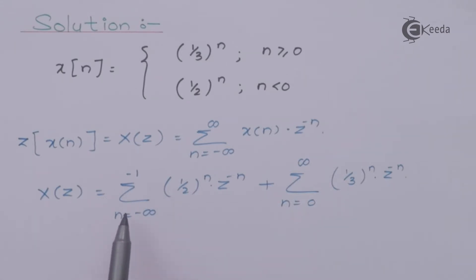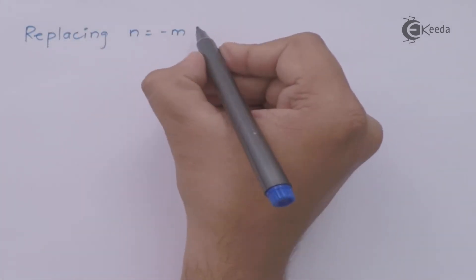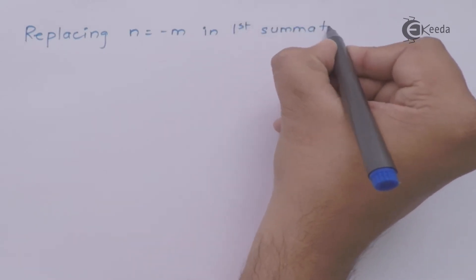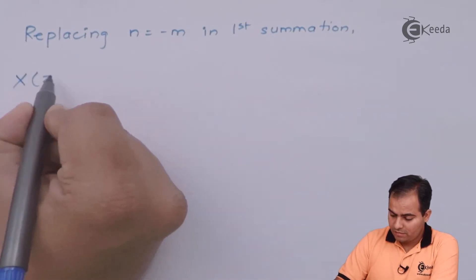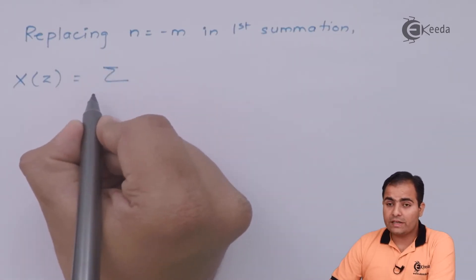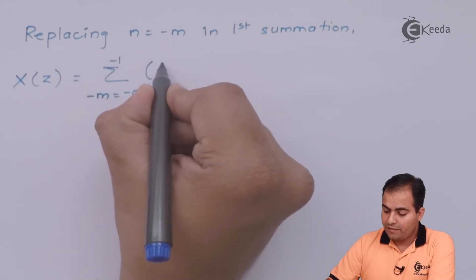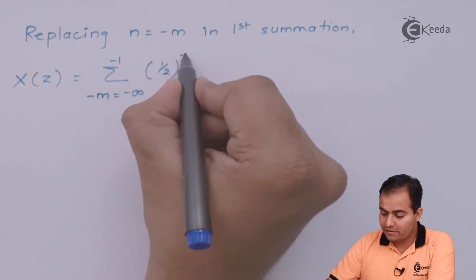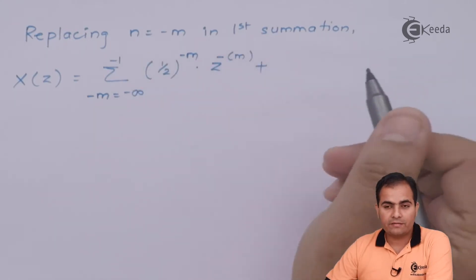There is a formula for the summation from 1 to infinity of a^n, which equals a/(1 − a). We can use this by replacing n with −m, applying the time reversal property. Replacing n = −m in the first summation, the variable −m varies from minus infinity to minus 1, giving us (1/2)^(−m) · Z^(m). The right-hand side part remains as it is.